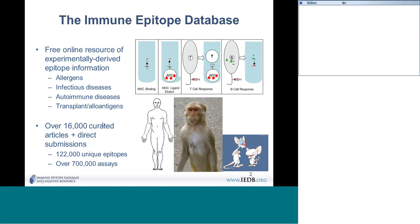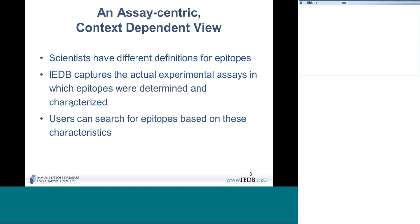The step of peptide binding to MHC is crucial essentially for something to become an epitope. In total at this point, we have 16,000 curated articles and direct submissions, 120,000 unique epitopes, and 700,000 assays. We are dealing with epitopes from humans, monkeys, mice, and any kind of host that you can think of.